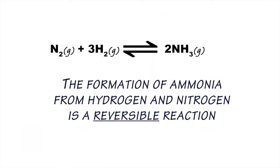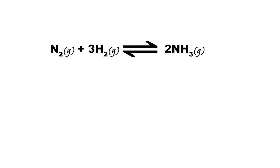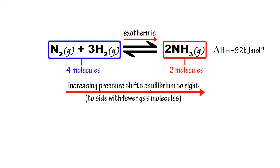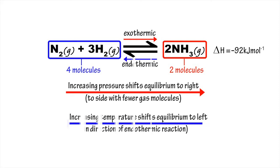The formation of ammonia from hydrogen and nitrogen is a reversible reaction, being exothermic in the forward direction. According to Le Chatelier's principle, high pressures shift the equilibrium to the right, so improve the yield of ammonia, as there are only two molecules of ammonia gas produced for every four reactant gas molecules.